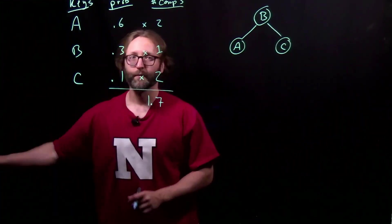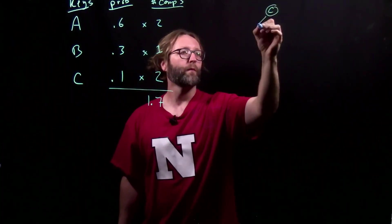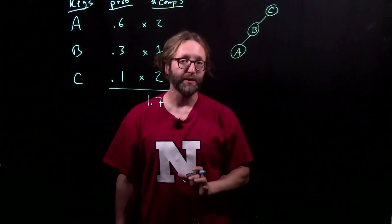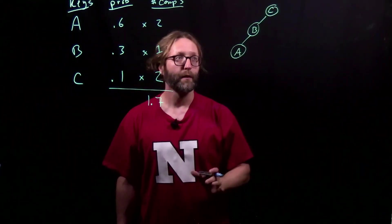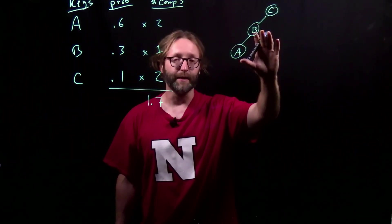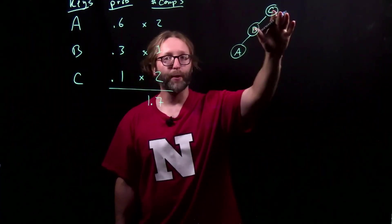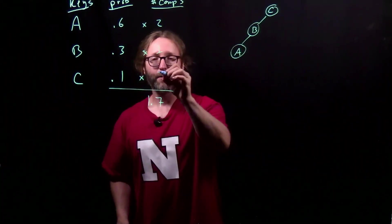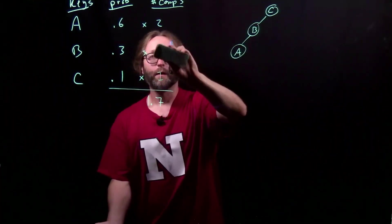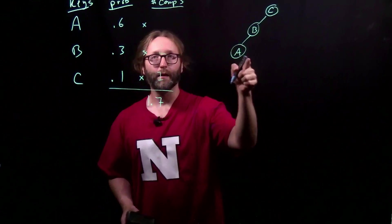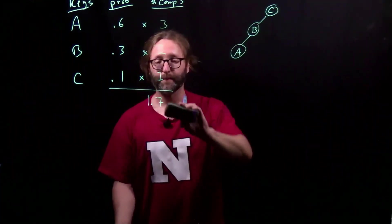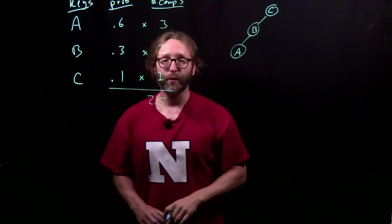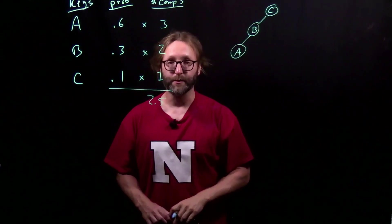Let's look at another tree. Here I've skewed the tree completely to the left. Remember, it still has to satisfy that binary search tree property. Everything in C's left subtree has to be less than it. This changes the number of comparisons. Now there's only one comparison for C, two comparisons for B, and three comparisons for A. Summing these up gives us 2.5 comparisons on average. That's even worse.